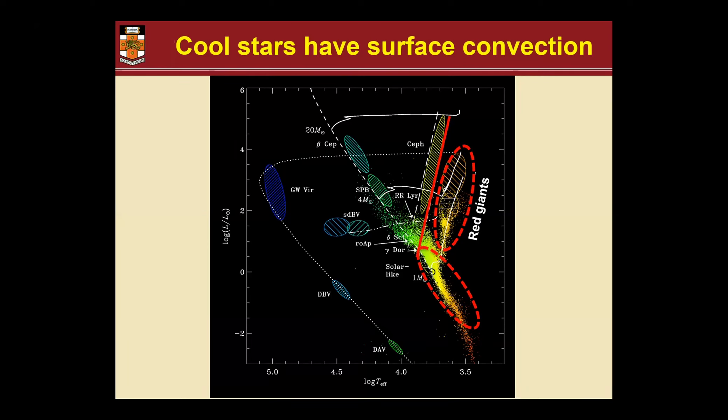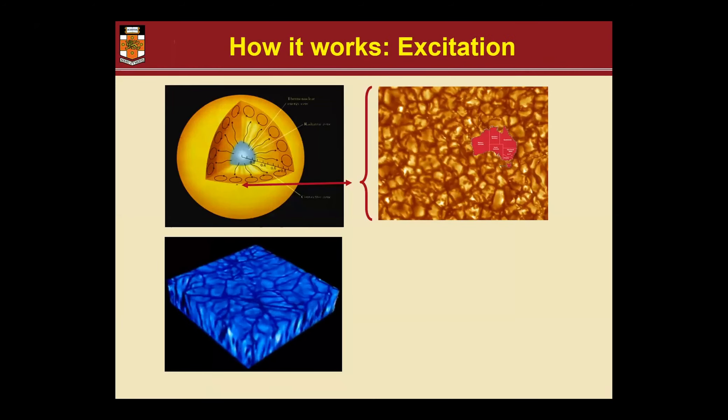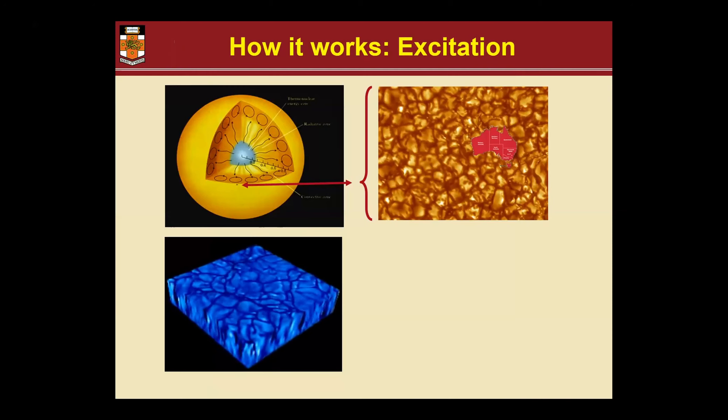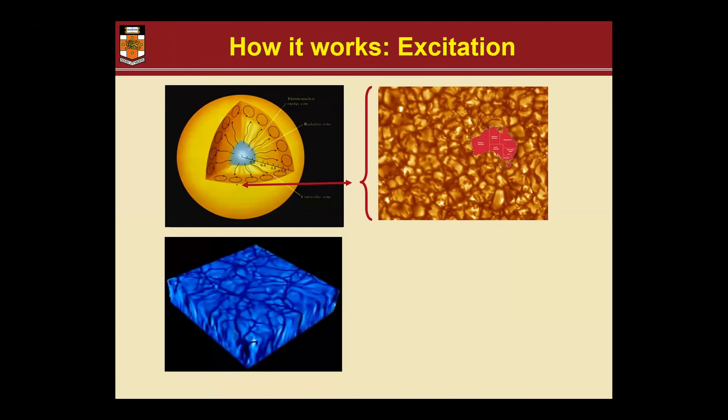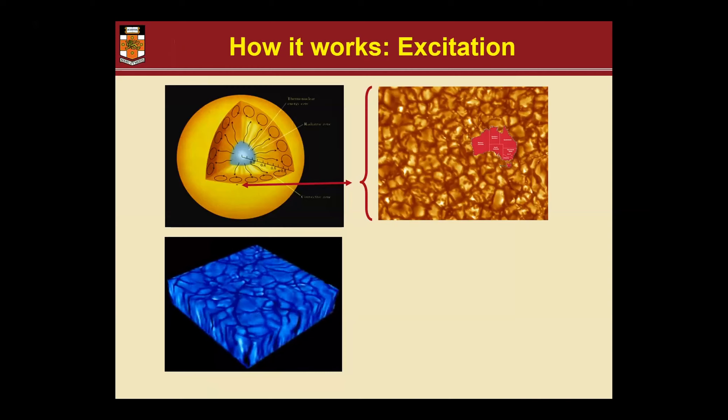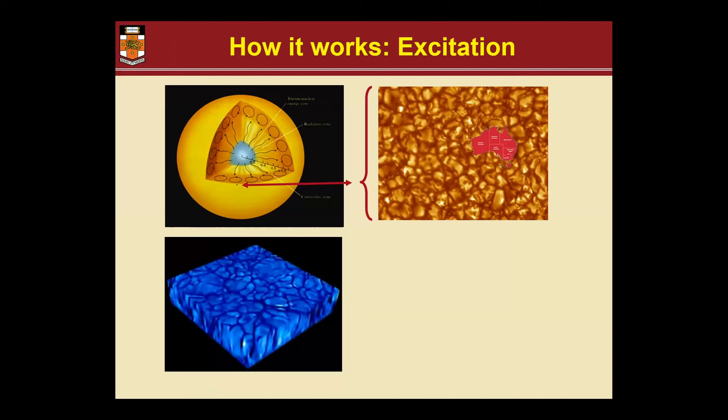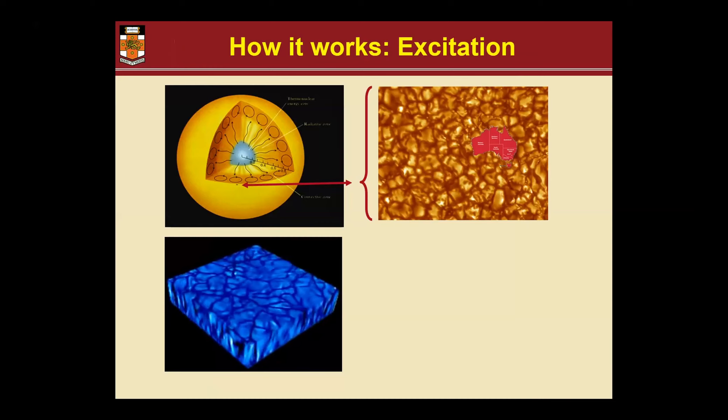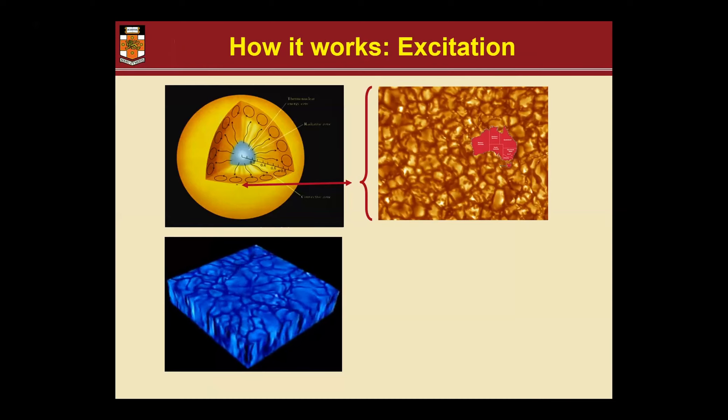This convection, shown in this cartoon of the sun, gives turbulent motion. If you take a picture of the solar surface or a little pixel of it shown on the right at the top, you can see the manifestation of granulation - that is basically hot gas boiling inside the star reaching up to the surface.